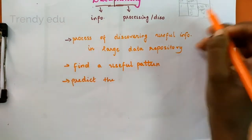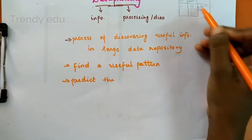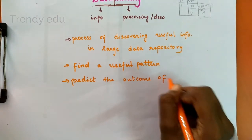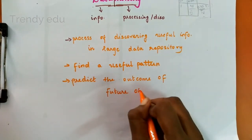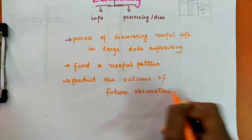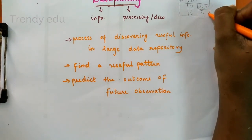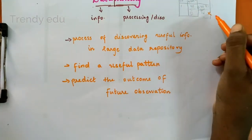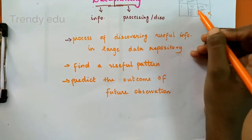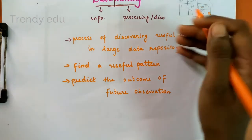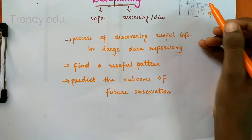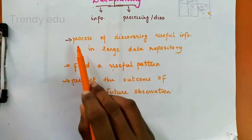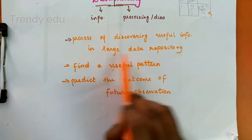From this we are predicting the outcome of future observation. The fourth semester has not happened yet, but we are predicting that the student may get 90 percent, above 90 percent, or below 90 percent — say 89 percent — by finding a useful pattern. So this is data mining: the process of discovering useful information from a large data repository.